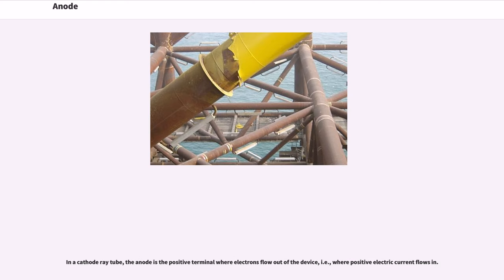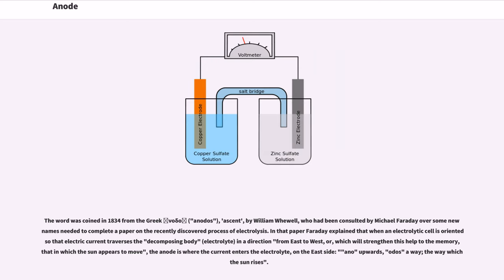In a cathode ray tube, the anode is the positive terminal where electrons flow out of the device, i.e., where positive electric current flows in. The word was coined in 1834 from the Greek ἄνοδος (anodos, ascent) by William Whewell.